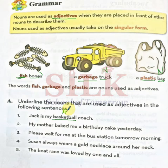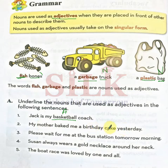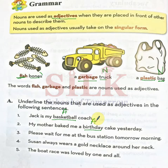Number two: My mother baked me a birthday cake yesterday. Ab 'mother' bhi yahan par noun hai. Kya koi word yahan par noun ko describe kar raha hai? Birthday cake — cake is noun. Cake ko kaun describe kar raha hai? Birthday. Cake jo hai, woh birthday cake hai. Underline 'birthday' — birthday is adjective, kyunke woh cake ko describe kar raha hai.